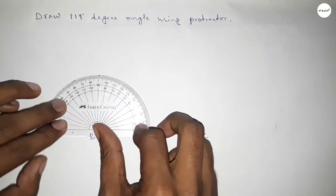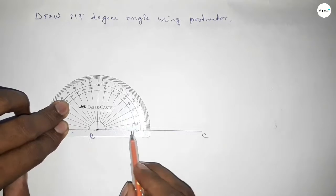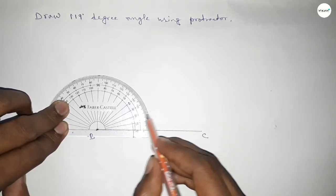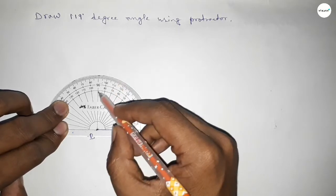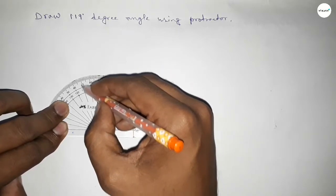So this is starting angle 0, 10, 20, 30, 40, 50, 60, 70, 80, 90, 100, 110, 115, 116, 117, 118, 119. So this is 119 degrees.